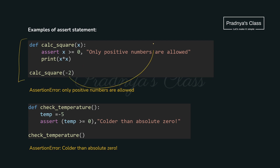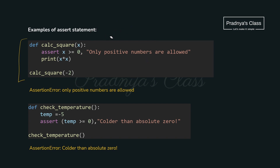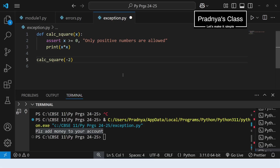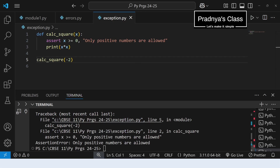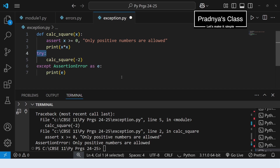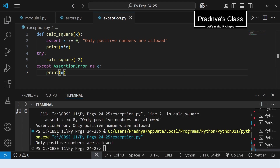Look at this example — we are passing a value to a function. If it is greater than or equal to 0, we print a message; if the condition evaluates to false, the error message is printed. We are passing -2, which is not >= 0, so we get an AssertionError: 'Only positive numbers are allowed' because we need to calculate the square of only positive numbers. Let's execute this in VS Code — our program is getting terminated with the error. To avoid this, we enclose the function call in a try-except block and now we get a proper message.